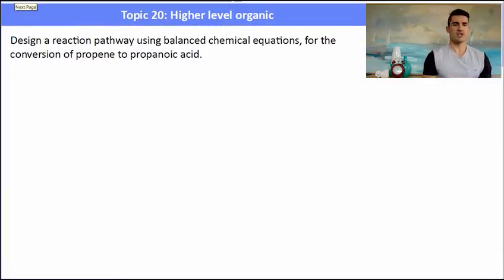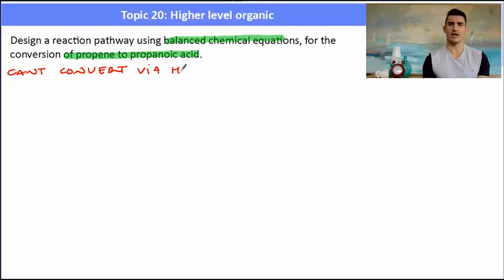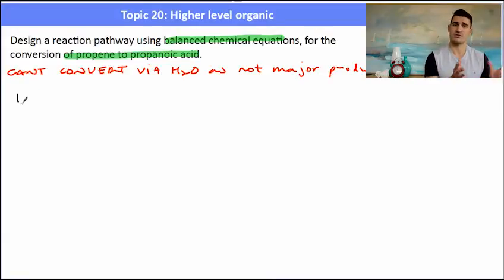Okay the second example. Design a reaction pathway using balanced chemical equations. So this is slightly different for the conversion of propene to propanoic acid. So the words balanced chemical equations means I need to account for all of the reactants and the products and balance those up. Now the problem here is I can't convert via the water slash phosphoric acid catalyst reaction here because my major product will not actually be 1-propanol. So I need to find another reaction pathway that allows me to do this without using that pathway because Markovnikov's rule would produce a minor product and I don't want a minor product.